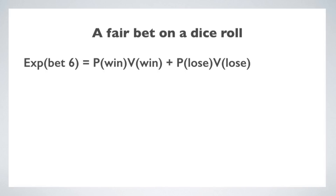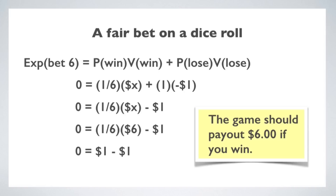We can run the same argument with a dice roll. Say I bet $1 on landing a six. The only difference from the coin toss is the probability of winning: the chance of landing any particular roll is 1 in 6. The game should pay out $6 if you win. If you play six times, you're guaranteed to lose $6, but one time out of six you'll gain the $6 back on average. So in the long run, you break even.